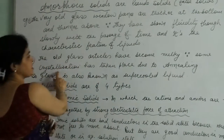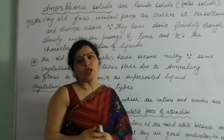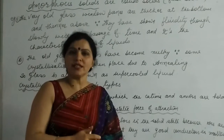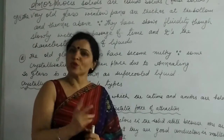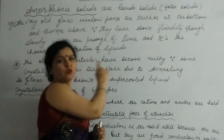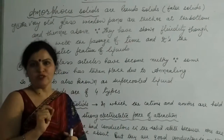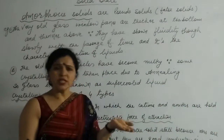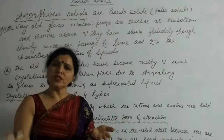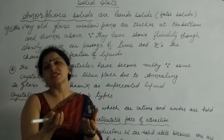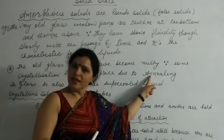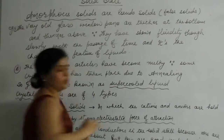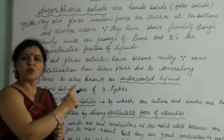Glass is actually a super-cooled liquid. This is due to annealing. Annealing means the solid is gradually warmed and cooled — a process of controlled crystallization which we call annealing. That is why glass is also known as a super-cooled liquid.